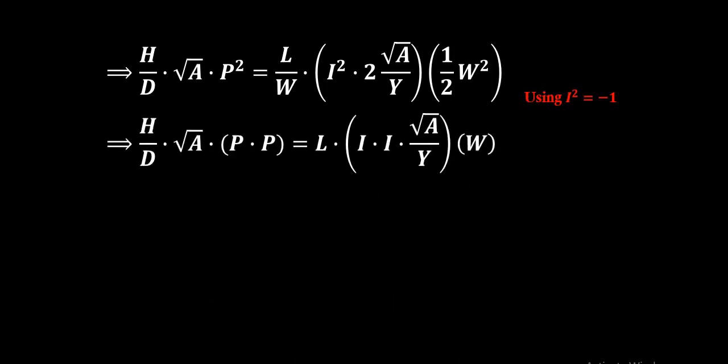Now in place of P square we can write P into P to the right side L by W. And to the extreme right, half of W square, one W from there will get cancelled, giving us L into i square. Now i square means i into i. Two and two already get cancelled, so remaining root A by Y into W.